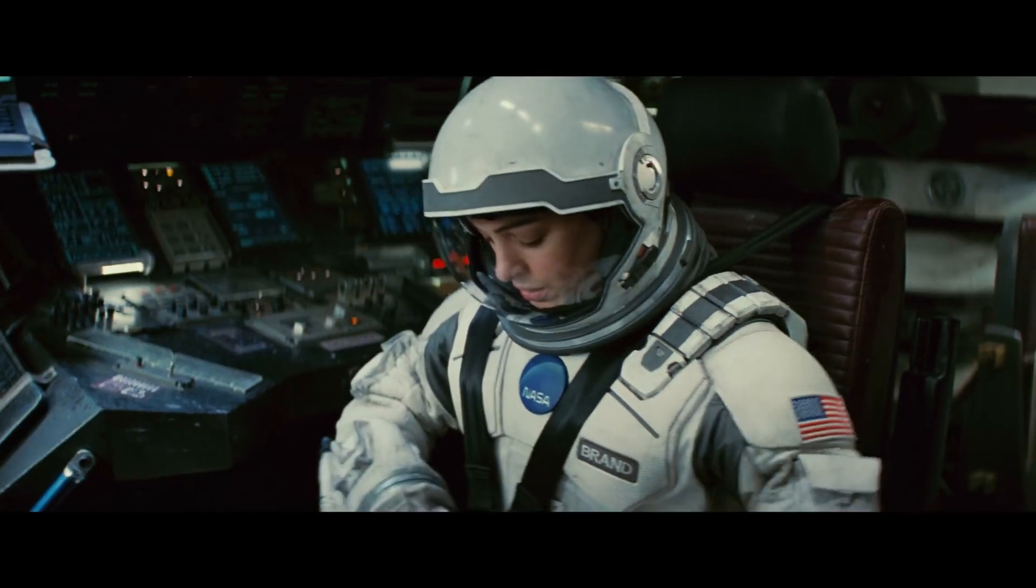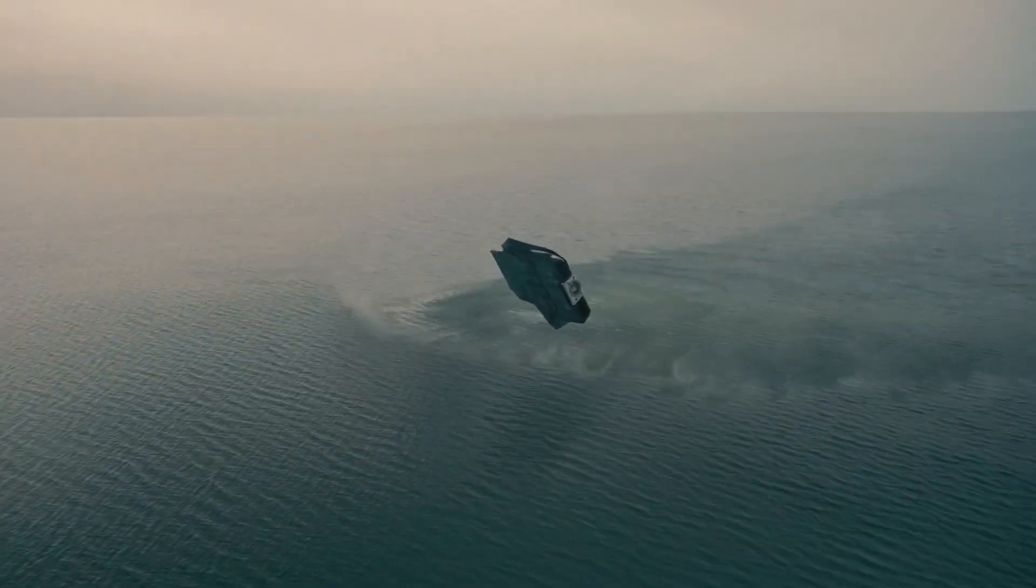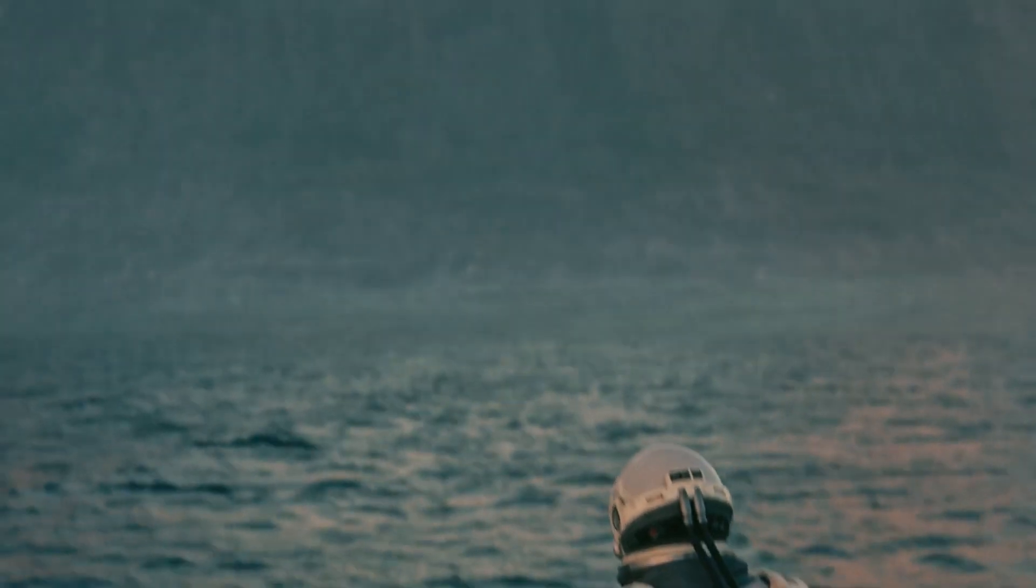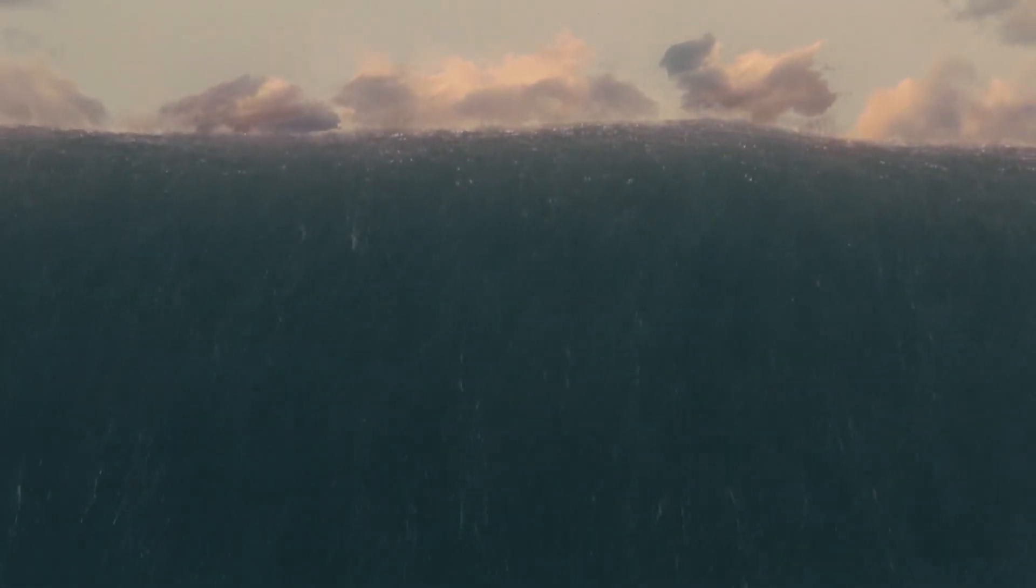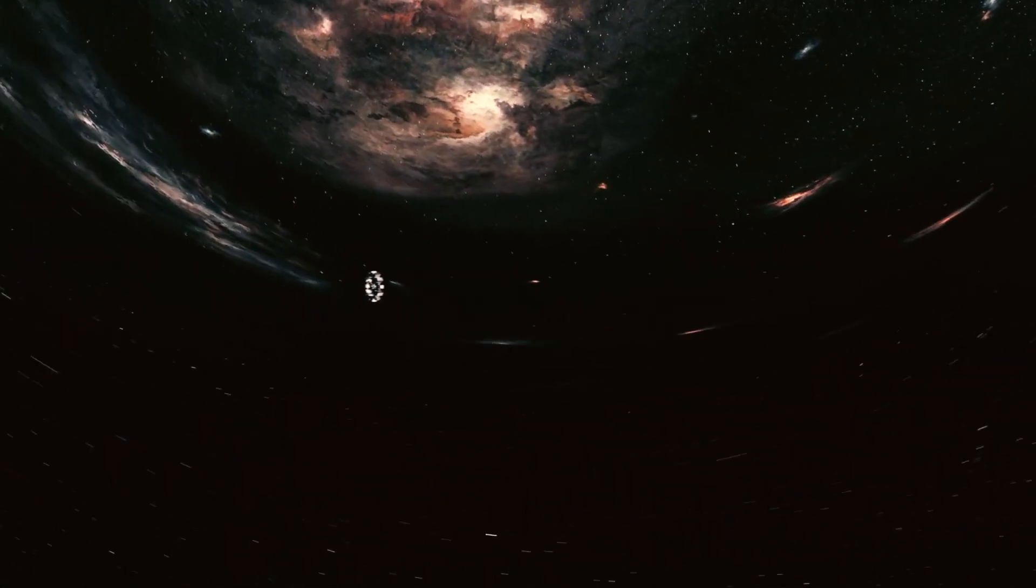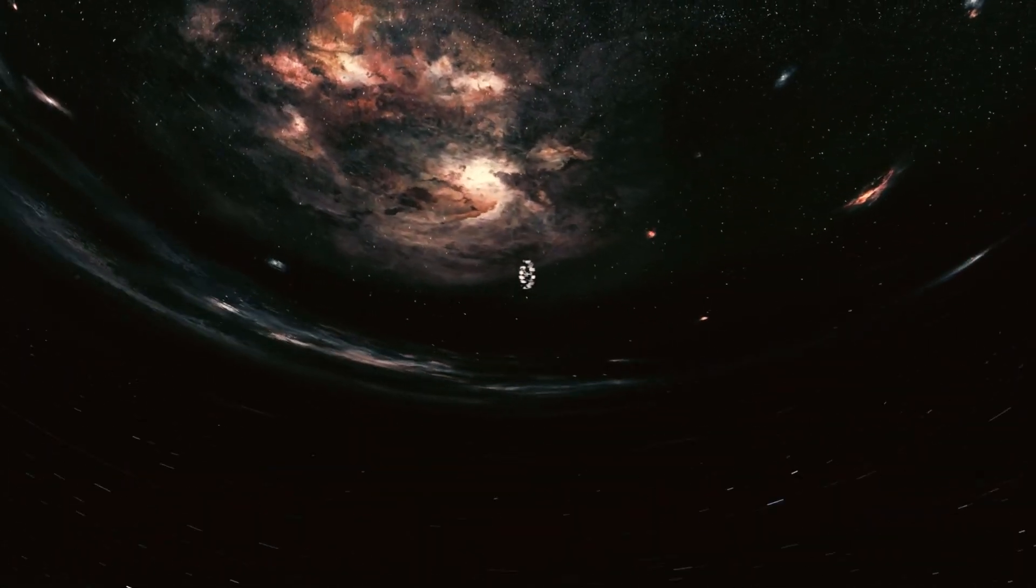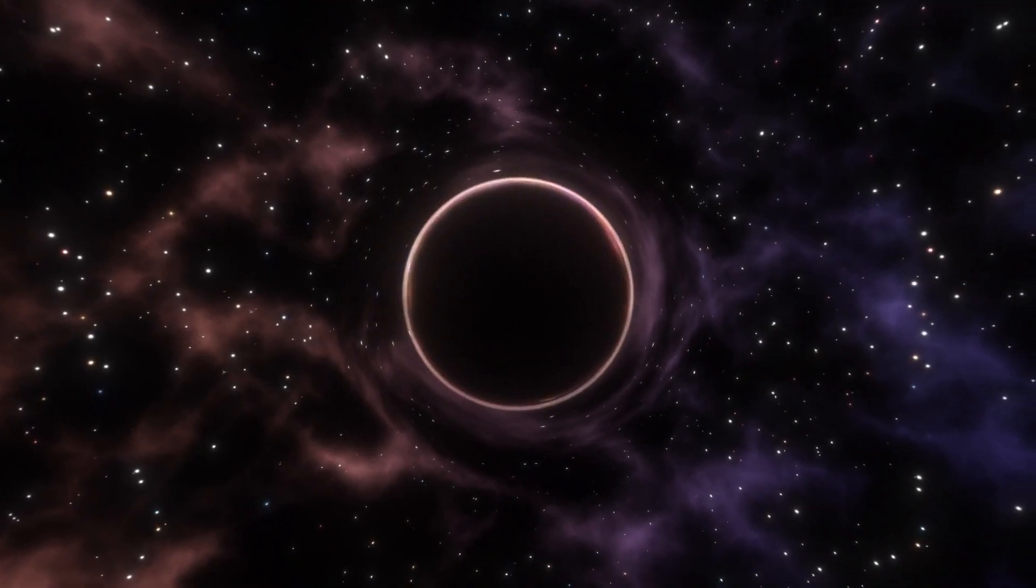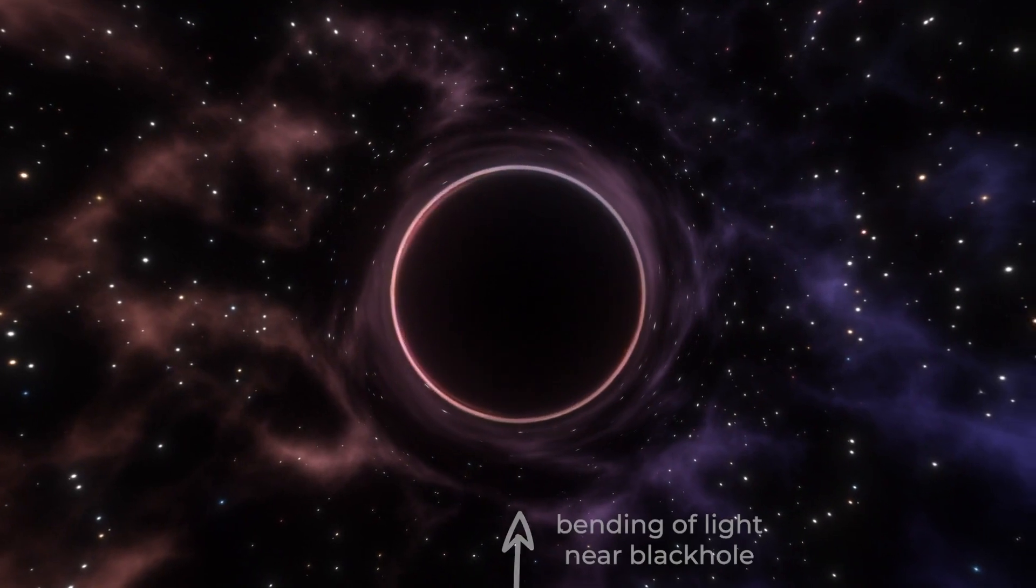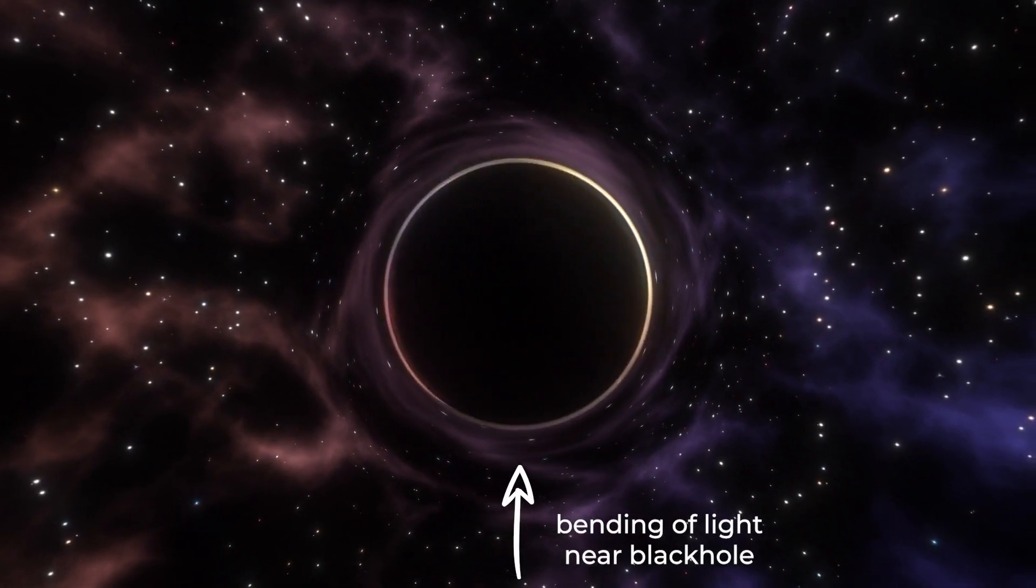The main character in it lands on a planet near a black hole. Each hour he spends there, it's seven years for the people not on the planet. It will actually happen so, but whether someone can survive being that close to a black hole is unknown. It's said that black holes are the heaviest objects in the universe. It's also said that light starts bending around black holes.